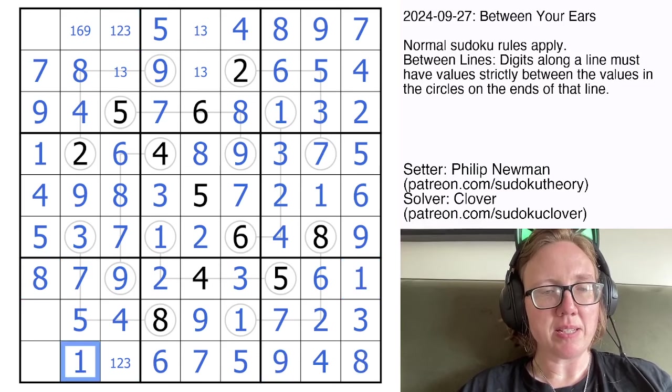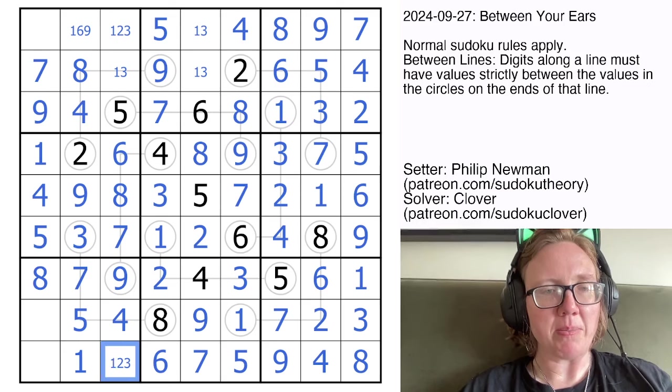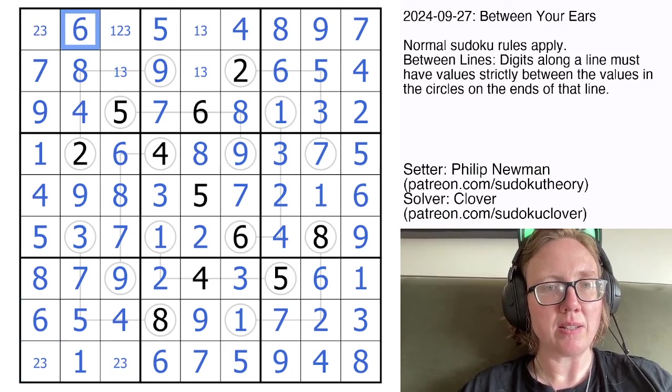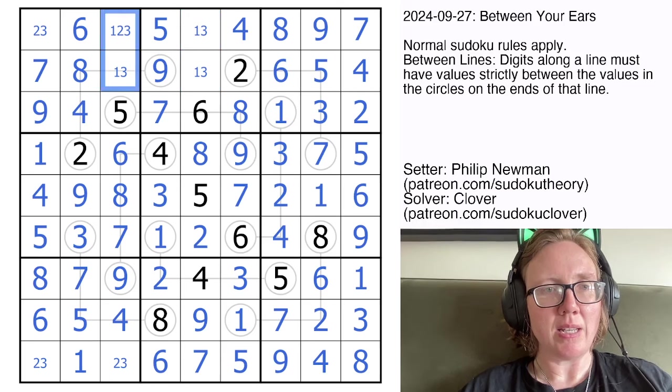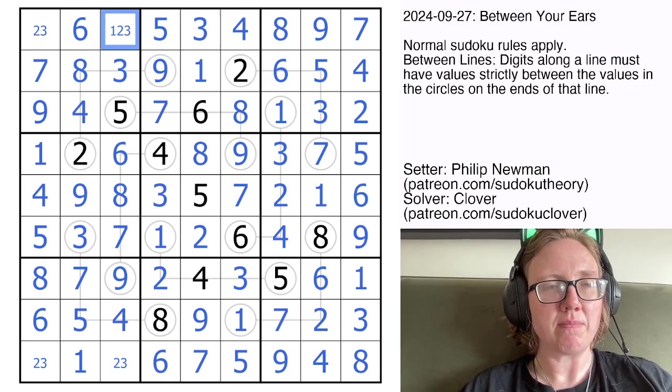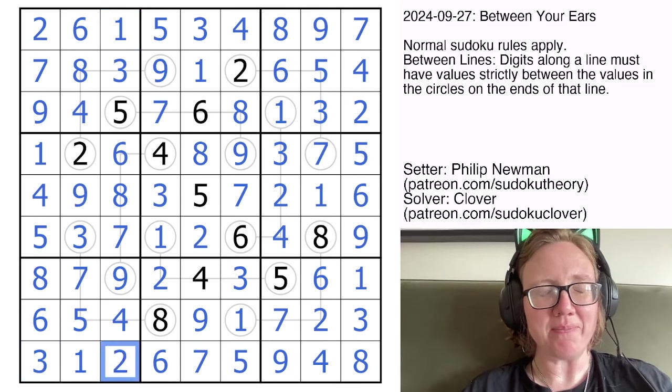That can't be a 6, of course. So that now can't be a 1. That's where we're going to place our 6. That's going to be a 2 or a 3. And this cell has to be in between 2 and 9, so that's done. Almost thought I had a little deadly pattern at the end there, but I didn't.